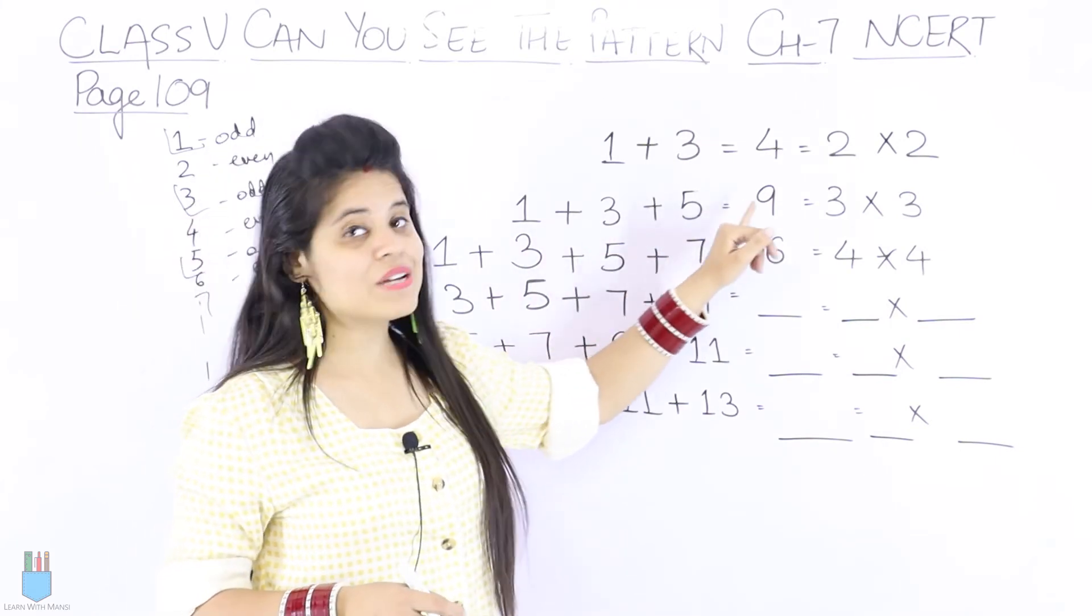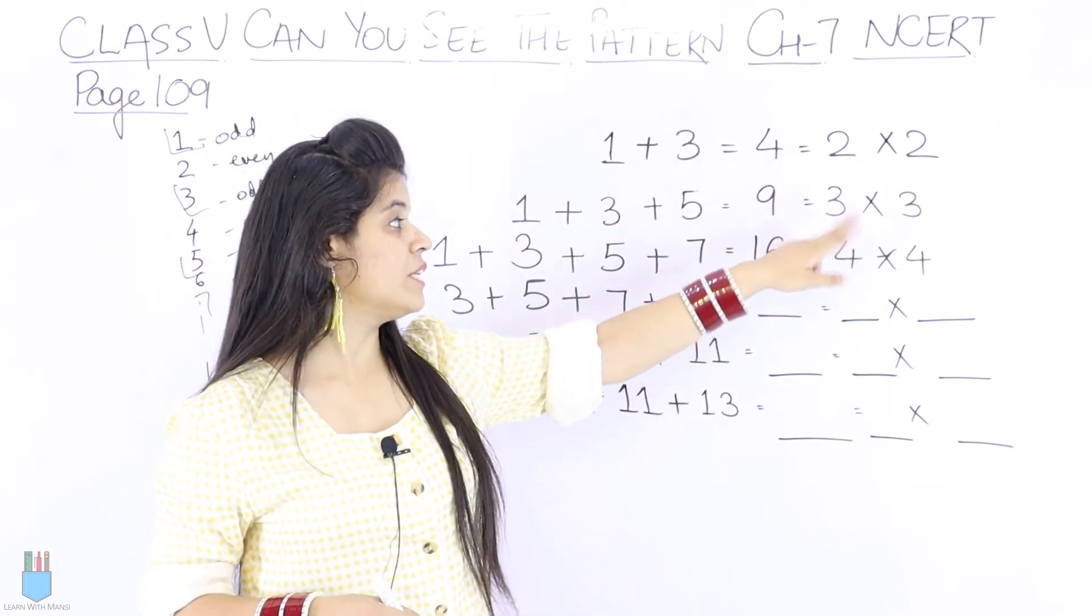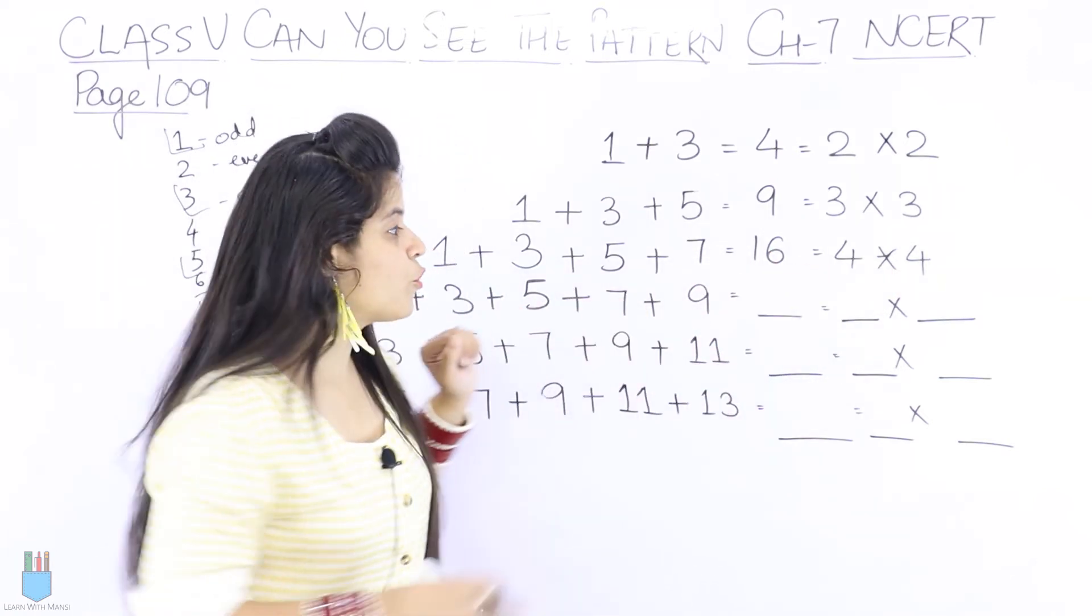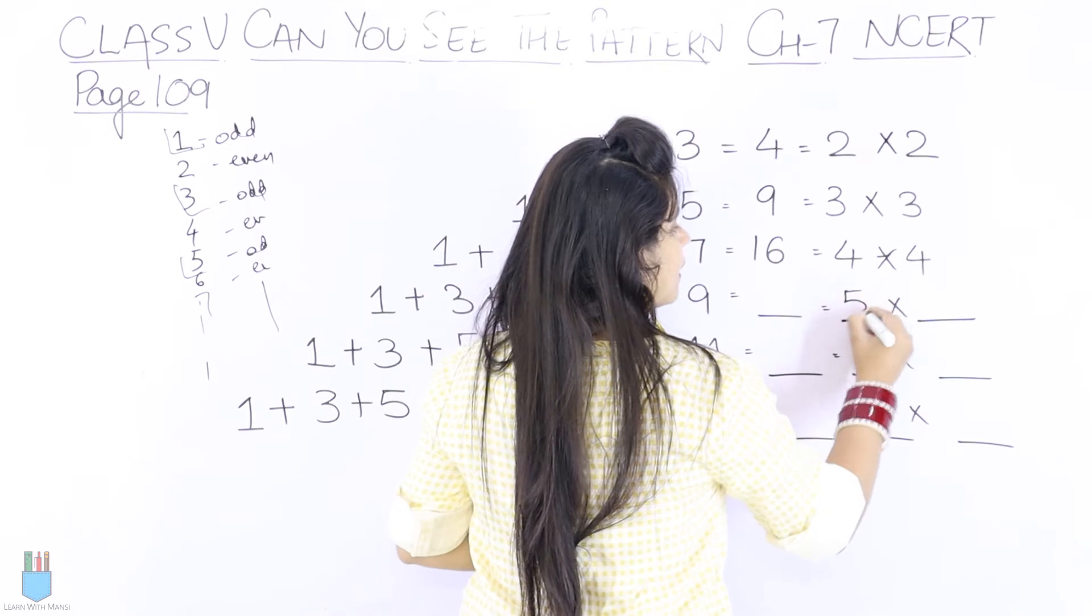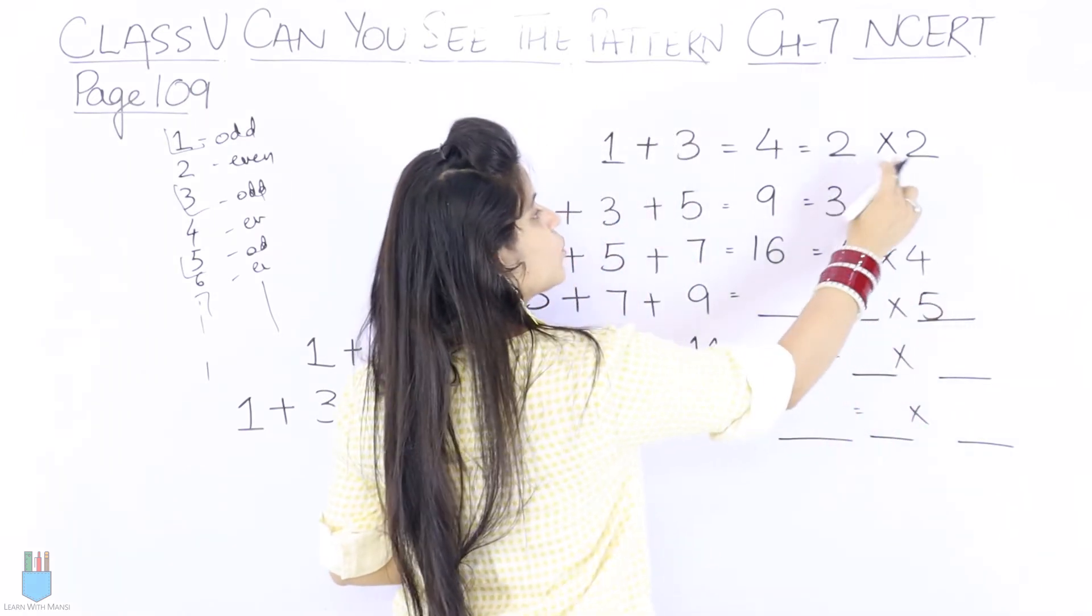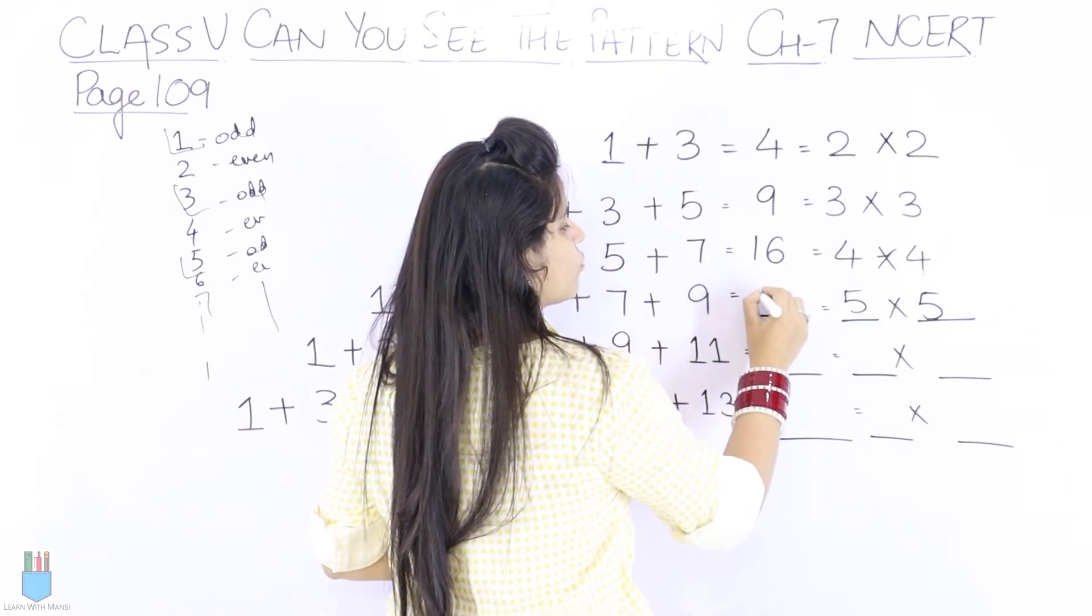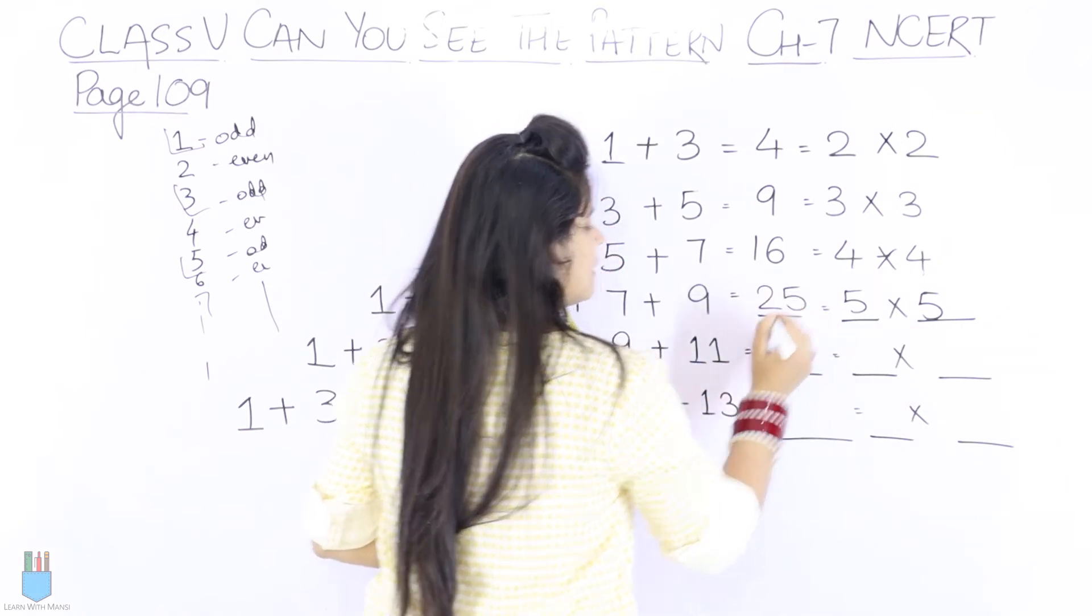Then 1 plus 3 plus 5 is 9. 9 is 3 into 3. Then if we add one odd number, then 16, which is 4 into 4. So next, what should happen? 5 into 5. 2 into 2, 3 into 3, 4 into 4. So here, 5 into 5 means 25.